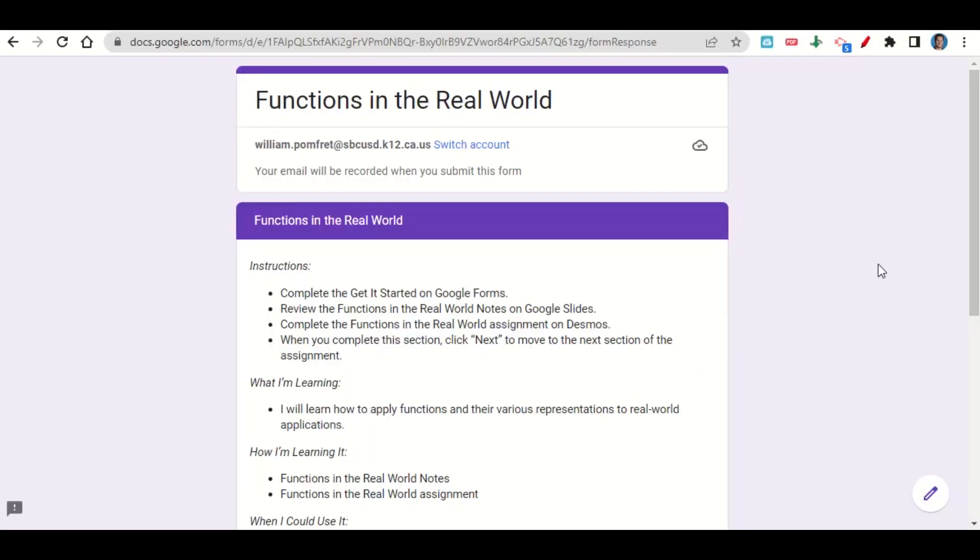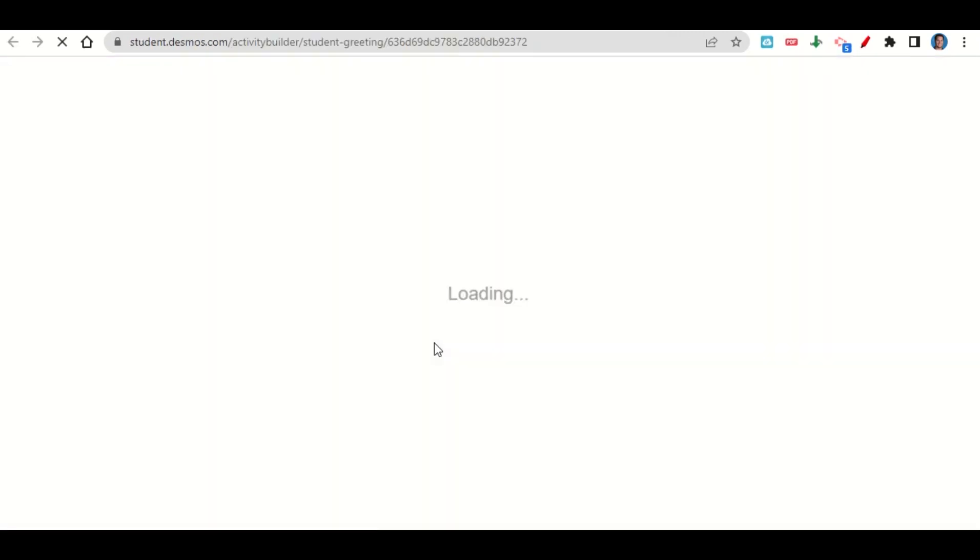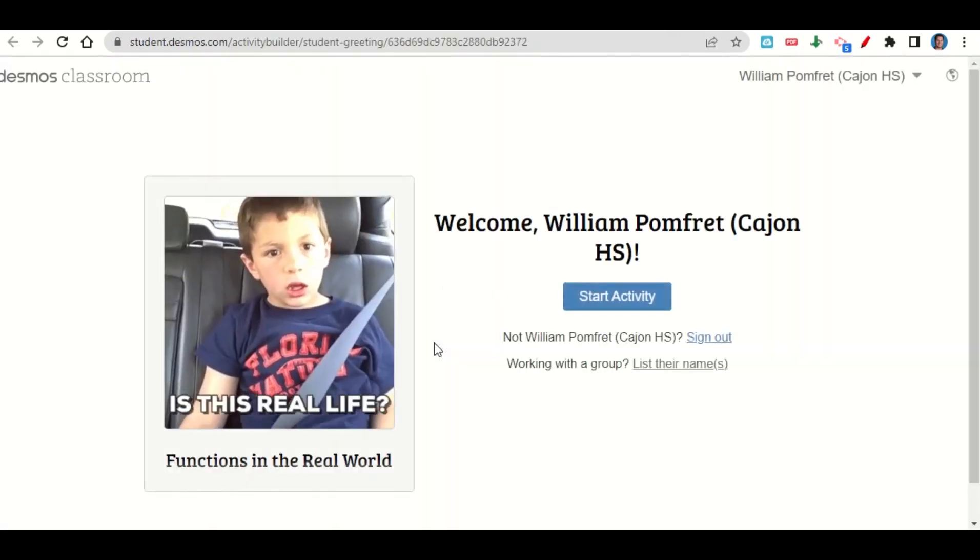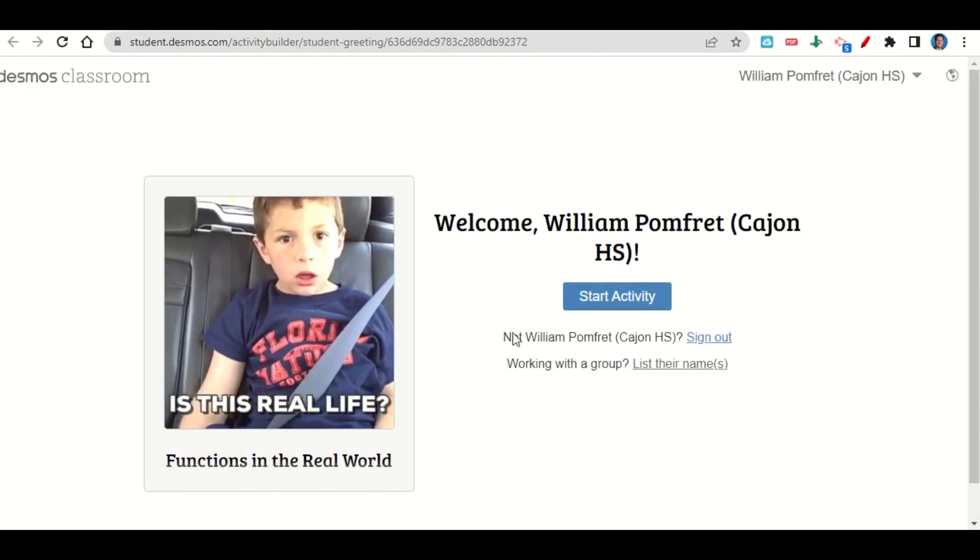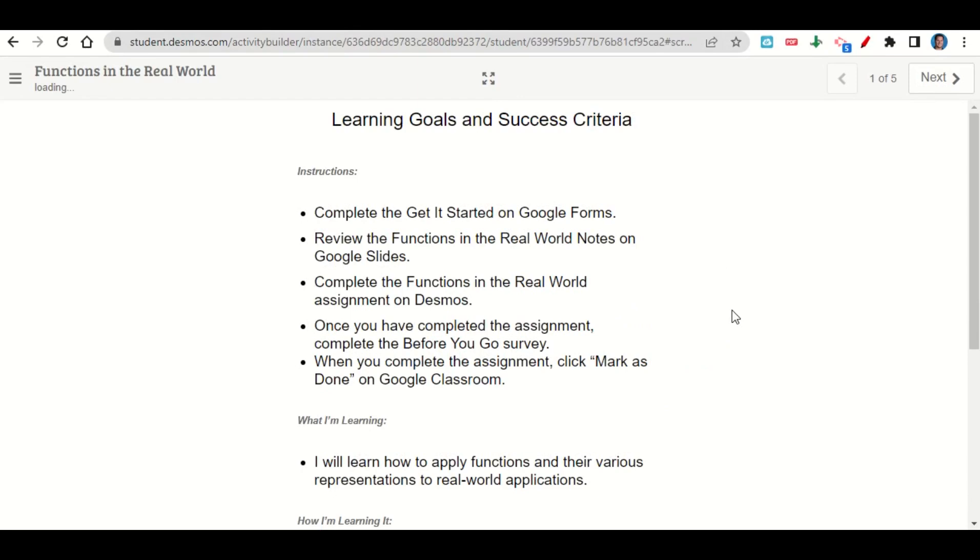Let's take a look now at the functions in the real world assignment. The assignment begins with the learning goals and success criteria. If we scroll down, there's a link here to take you to the Desmos activity. Go ahead and click on that link, and it should take you to a page that looks like this. We'll go ahead and click start the activity. The activity begins with the learning goals and success criteria. We'll go ahead and click next.